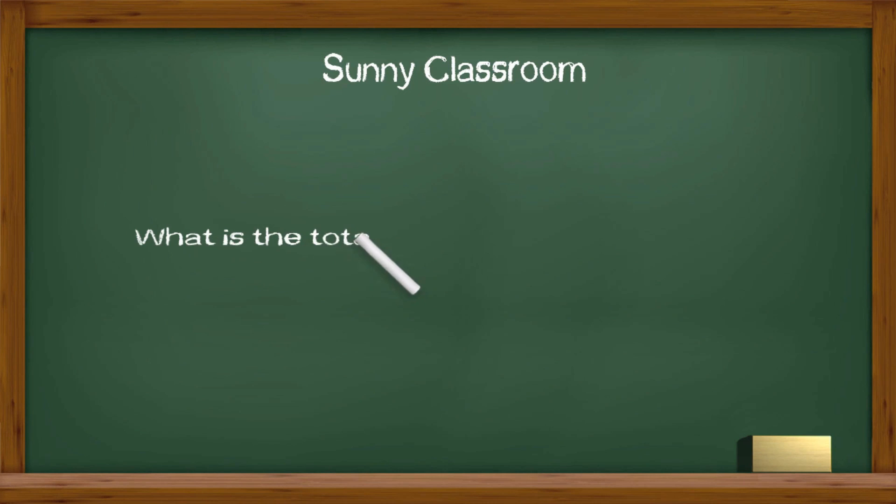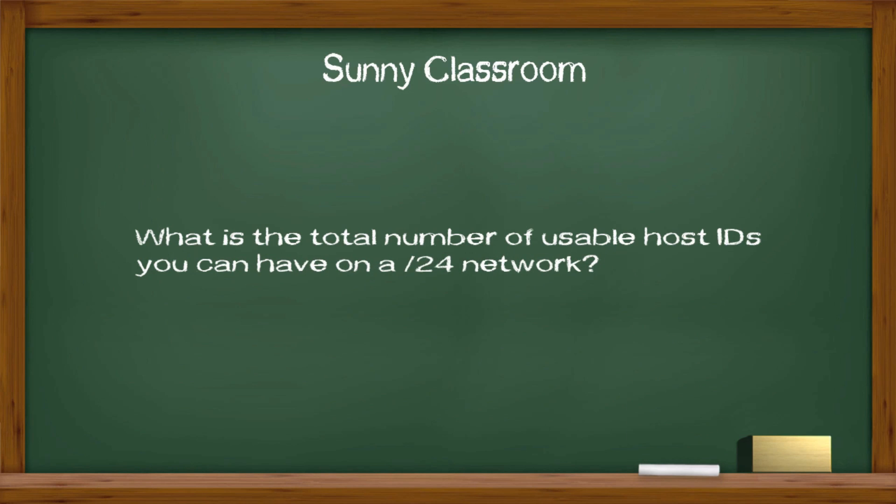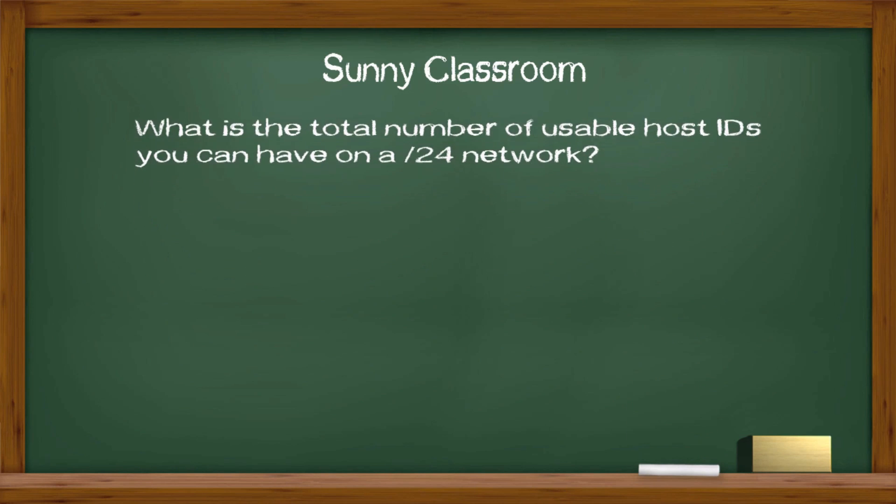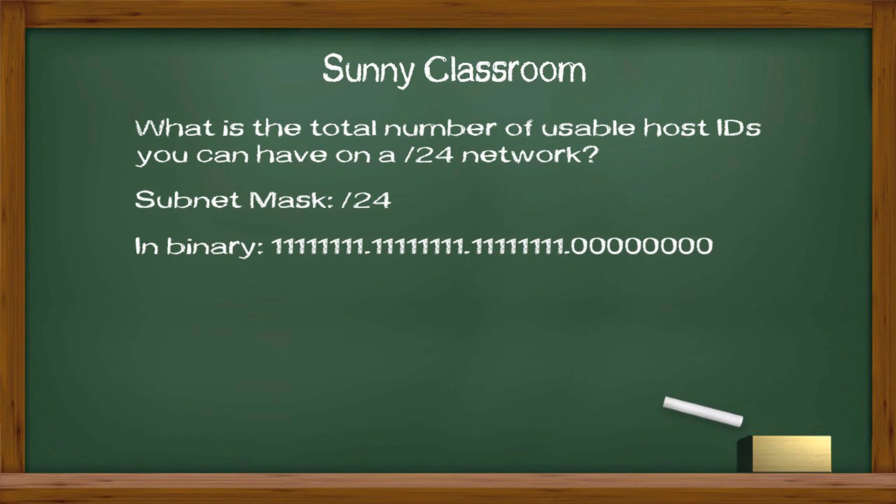For example, what's the total number of usable host IDs you can have on a slash 24 network? Forward slash 24 is the subnet mask in shorthand. In binary, slash 24 means the subnet mask has 24 ones followed by 8 zeros.